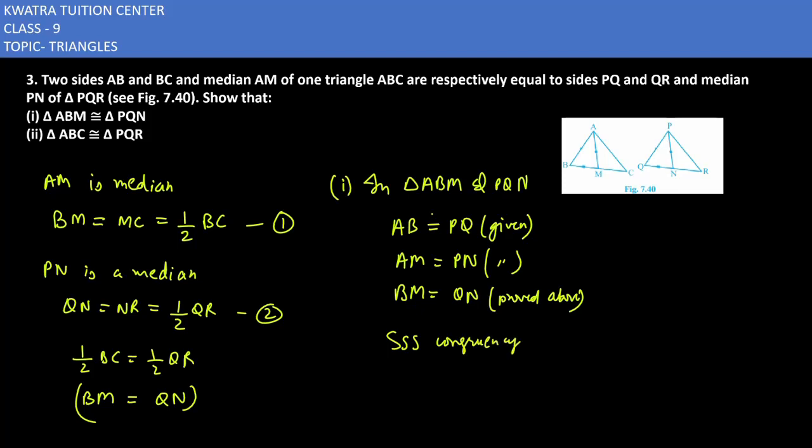Second case: in triangle ABC and triangle PQR, angle B and Q are equal by CPCT. In triangle ABC and triangle PQR, AB is equal to PQ, this is given. Second, angle B is equal to angle Q.